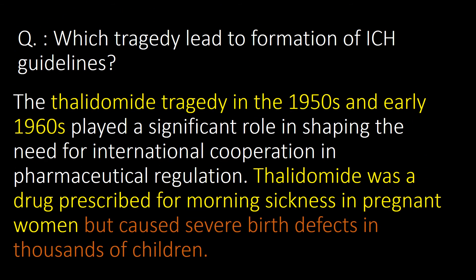Which tragedy led to the formation of ICH guidelines? The Thalidomide tragedy in the 1950s and early 1960s played a significant role in shaping the need for international cooperation in pharmaceutical regulation. Thalidomide was a drug prescribed for morning sickness in pregnant women but caused severe birth defects in thousands of children.